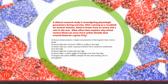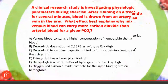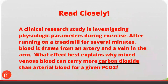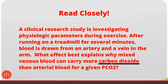Before we look at the answer choices, it's very important on the USMLE to read the question carefully and know what it's asking. In this question, the key is to recognize we're talking about carbon dioxide. The question asks what effect best explains why venous blood can carry more CO2 than arterial blood for a given pCO2. Most of the time we discuss hemoglobin in the context of oxygen, but here we're viewing it from the angle of CO2.